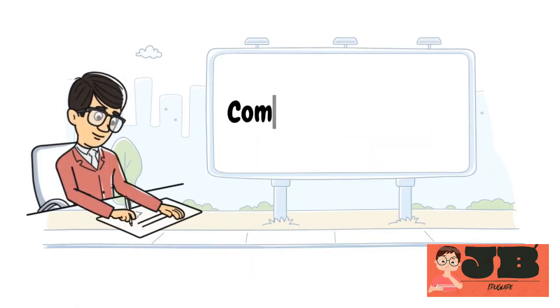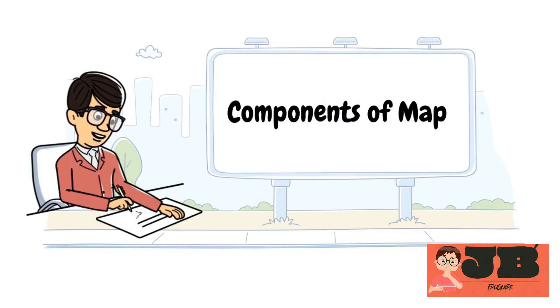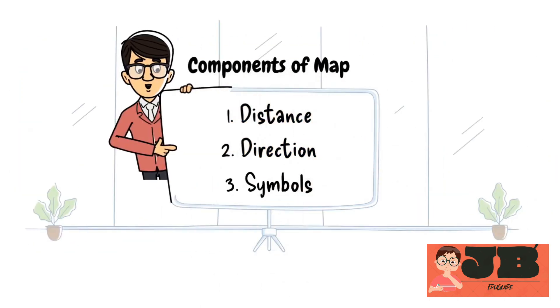Moving forward, let's understand about the components of map. I mean parts of map. Maps have several important components or parts that help us understand the information they provide. Like distance, direction, and symbols.